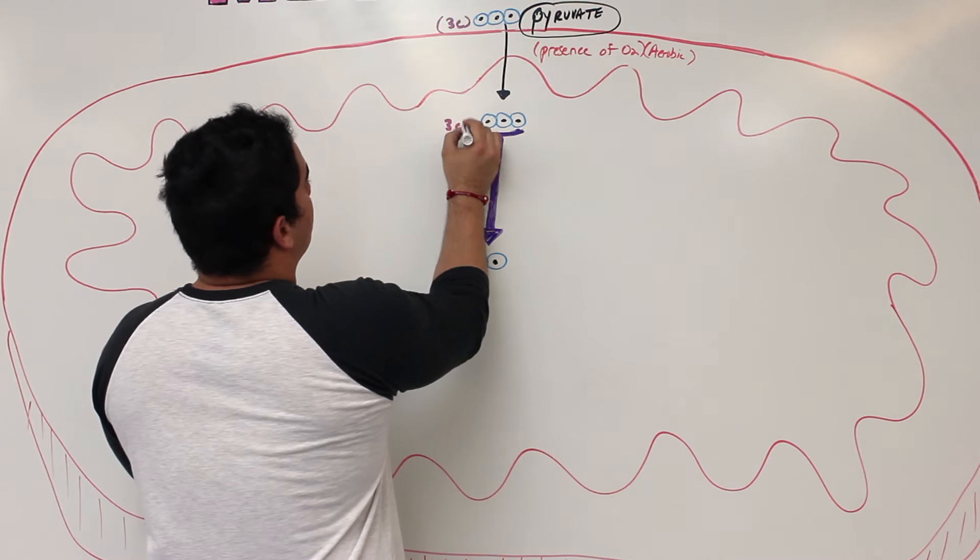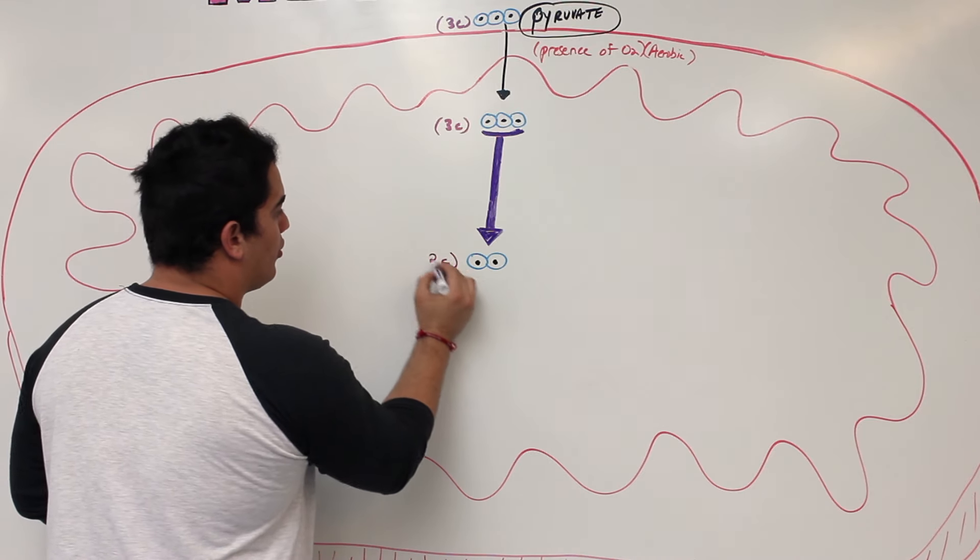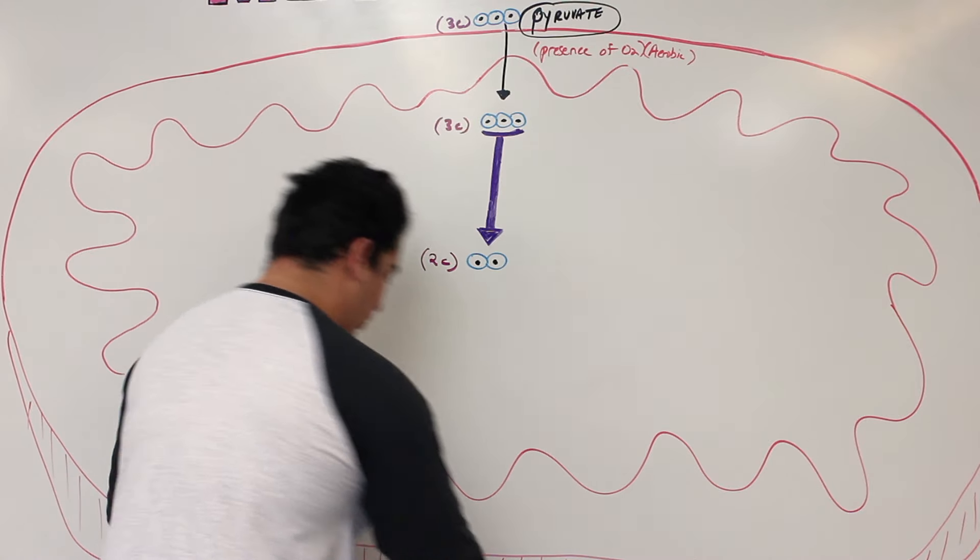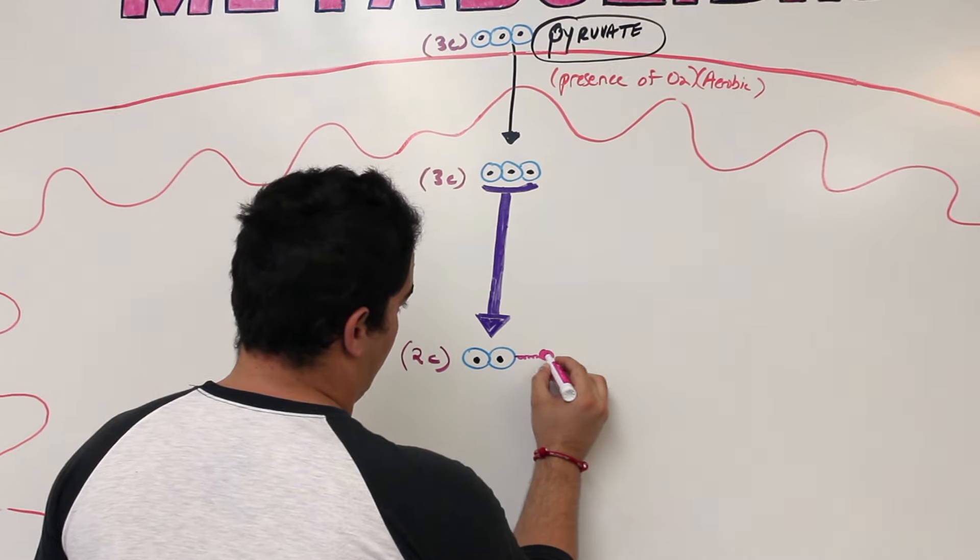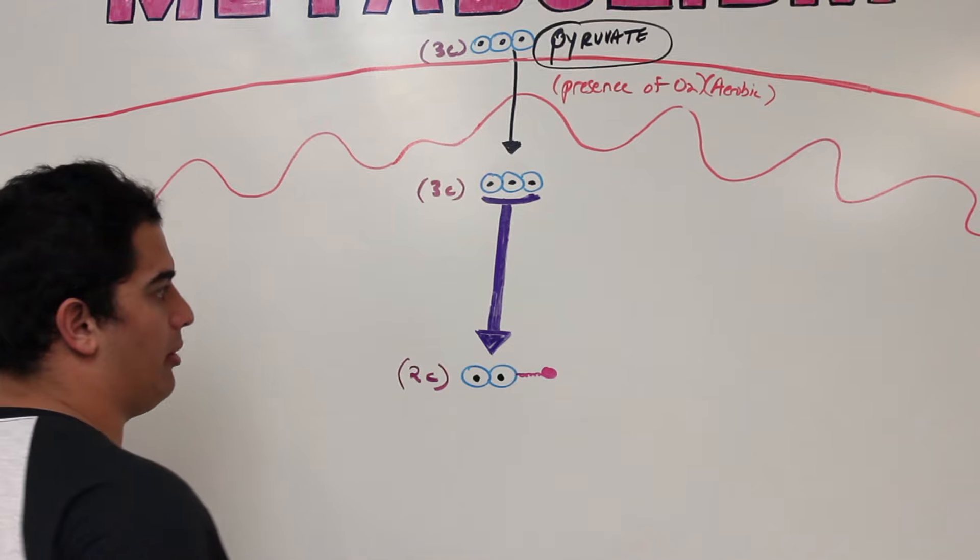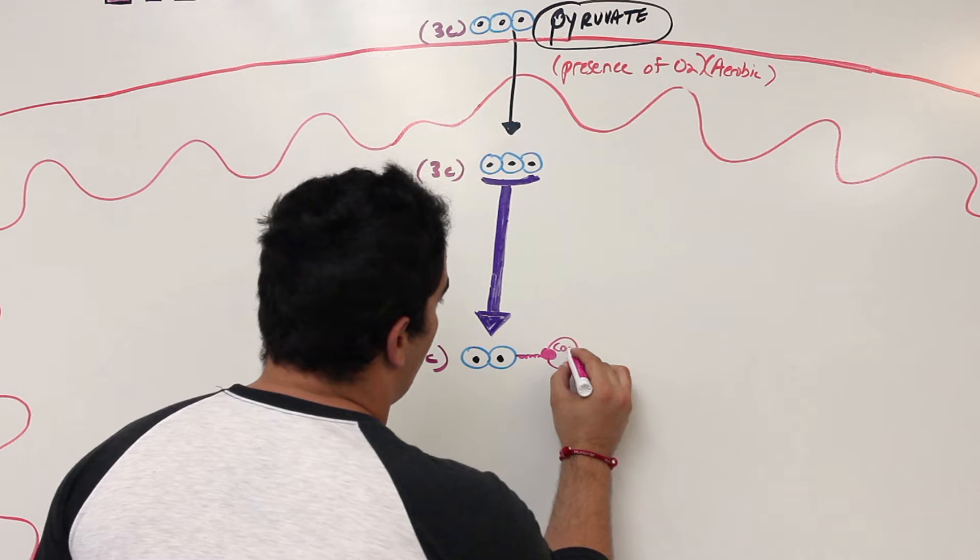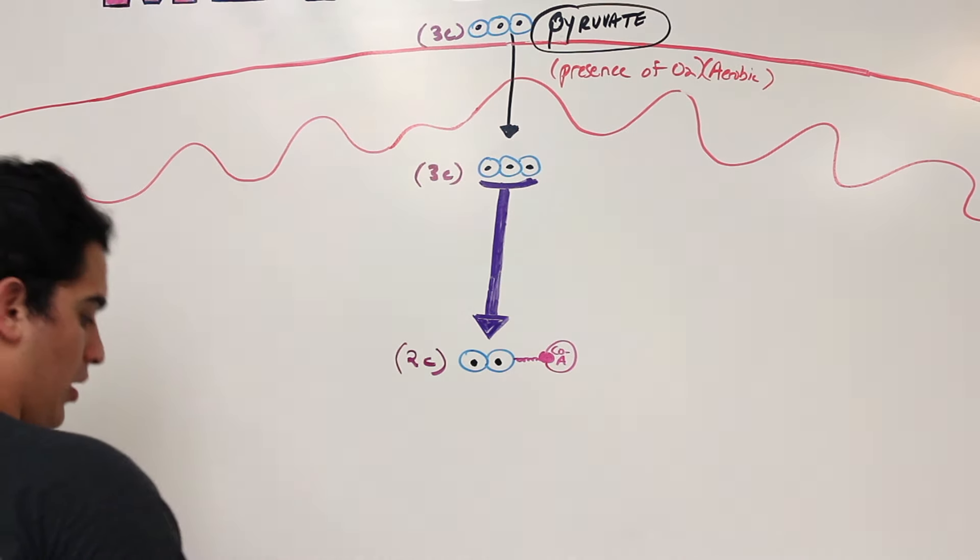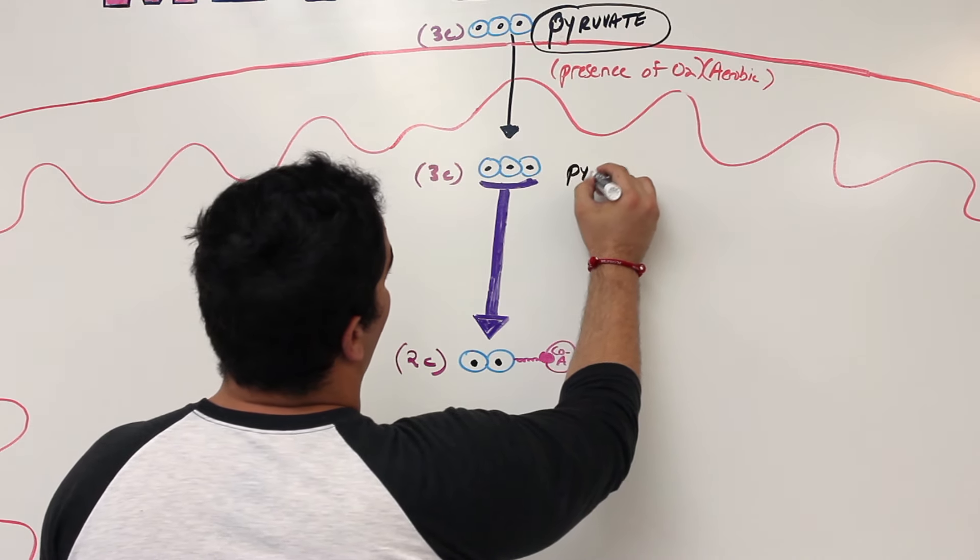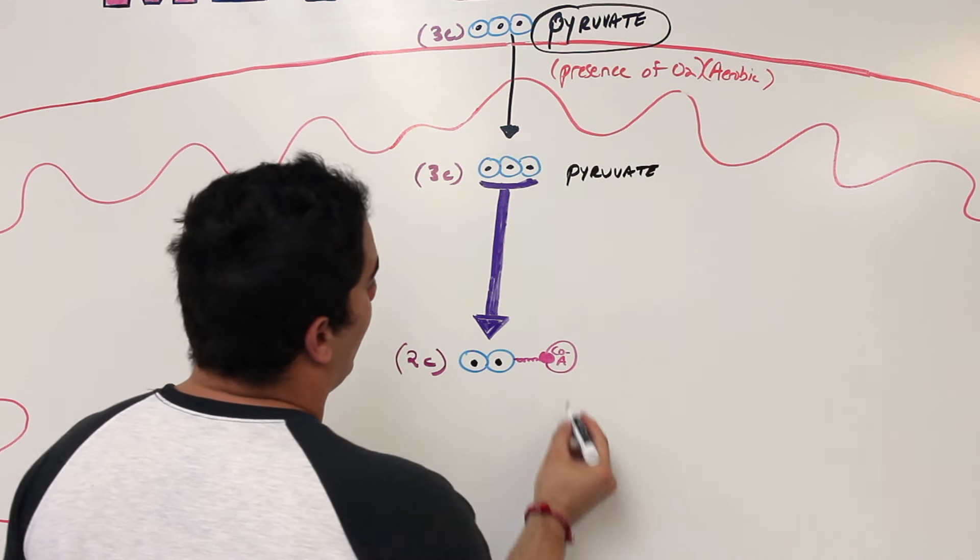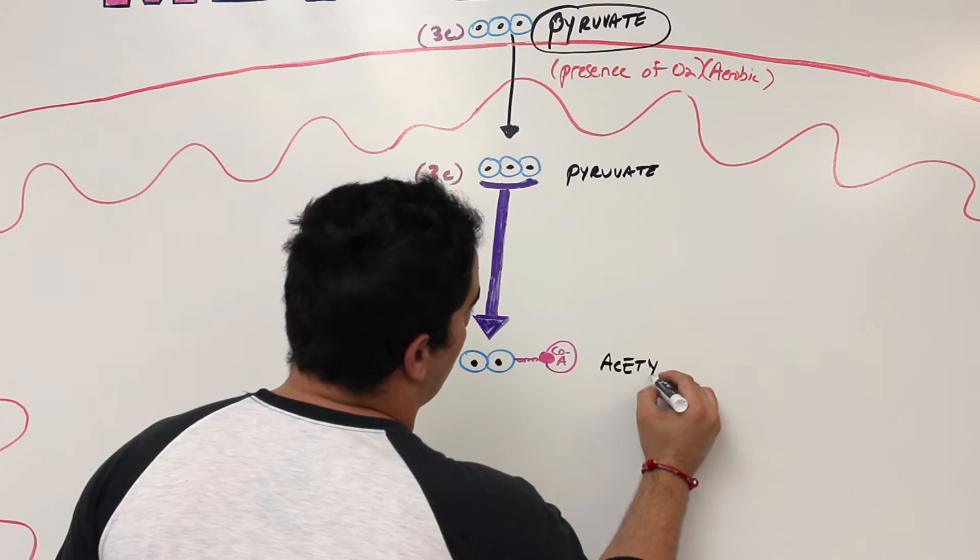Pyruvate is 3 carbons, right? Look what happens at the end of this reaction. It goes from 3 carbons to 2 carbons. Another thing happens, look at this. You see that right there? I added something onto this 2 carbon molecule. This 2 carbon molecule has this thing on it called a coenzyme A. So what did I do? I took pyruvate, which is my 3 carbon molecule, and converted it into acetyl-CoA.